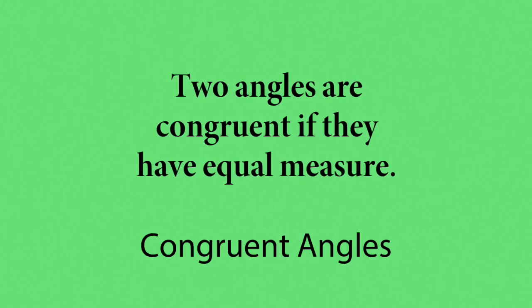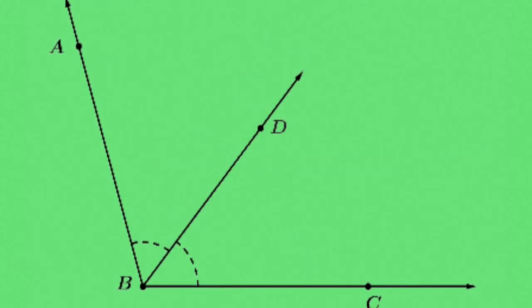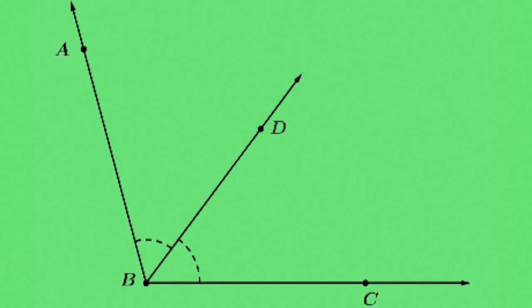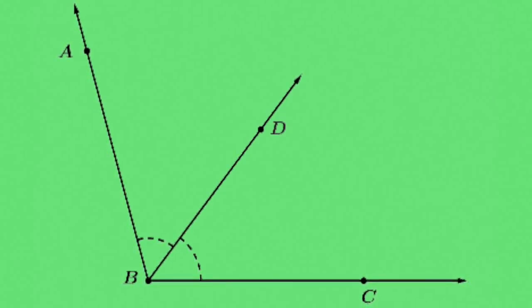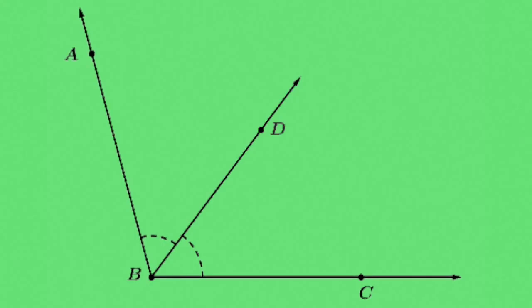We say that two angles are congruent if their angles have equal measure. We say that the angle bisector of an angle is a ray which separates the angle into two congruent angles. Here we have angle ABC bisected by ray BD, which means that BD is the angle bisector of angle ABC.